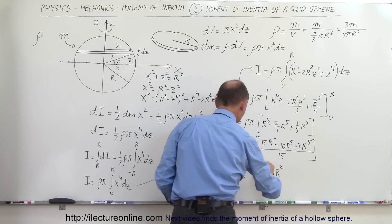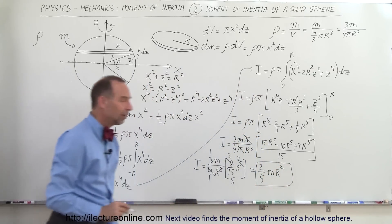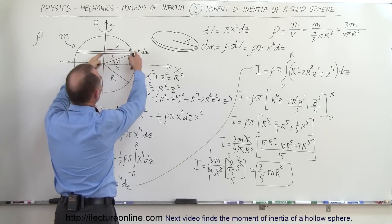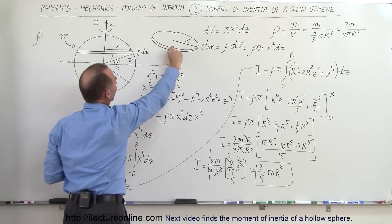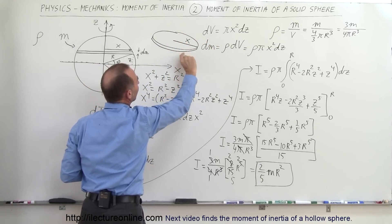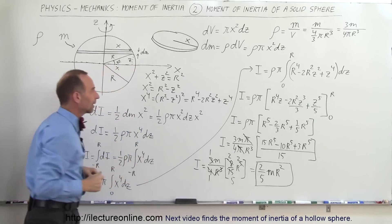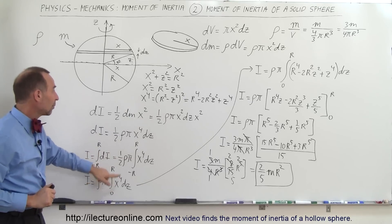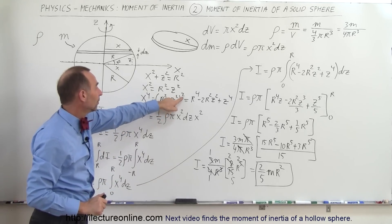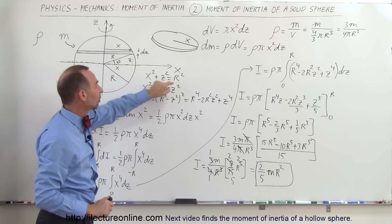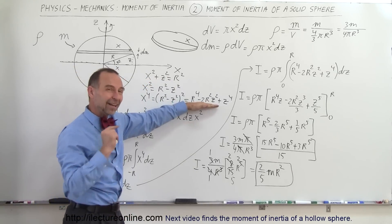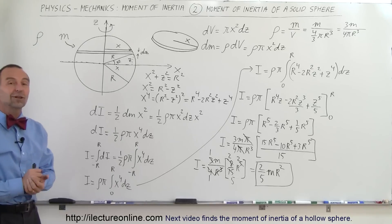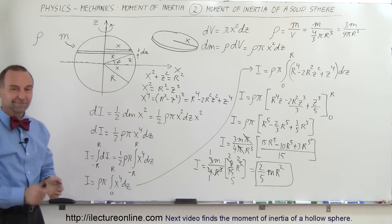The moment of inertia of a solid sphere is 2/5 MR². The key technique is slicing the sphere into thin discs of radius x and thickness DZ, using the Pythagorean theorem to convert x⁴ into terms of z, then integrating. The rest is algebra, and that's how we find the moment of inertia of a solid sphere. Thank you.